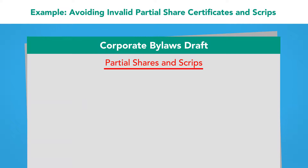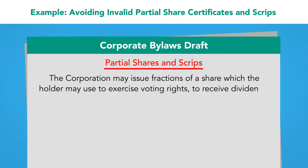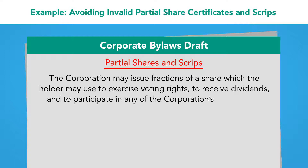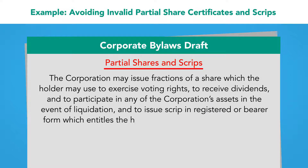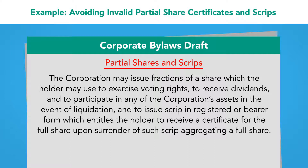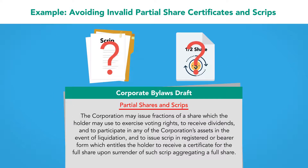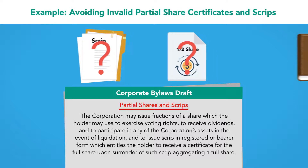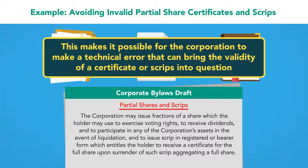Our template provision for partial shares and scrip states: "The corporation may issue fractions of a share, which the holder may use to exercise voting rights, to receive dividends, and to participate in any of the corporation's assets in the event of liquidation, and to issue scrip in registered or bearer form, which entitles the holder to receive a certificate for the full share upon surrender of such scrip aggregating a full share." The template does not include any information on what needs to be included in the fractional share certificates or scrip to ensure their validity, nor does it reference the applicable Wyoming statute. This makes it possible for the corporation to make a technical error that can bring the validity of certificates or scrip into question.